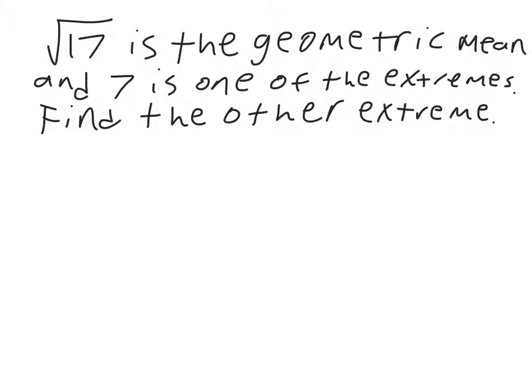So, in this case, we have square root of 17 is the geometric mean, and 7 is one of the extremes. Find the other extreme. So, again, we've got what we had before: A over X equals X over B. In this case, 7 is the A, and square root of 17 is the X. So, we're going to say 7 over square root of 17 equals square root of 17 over B, and then solve for B.